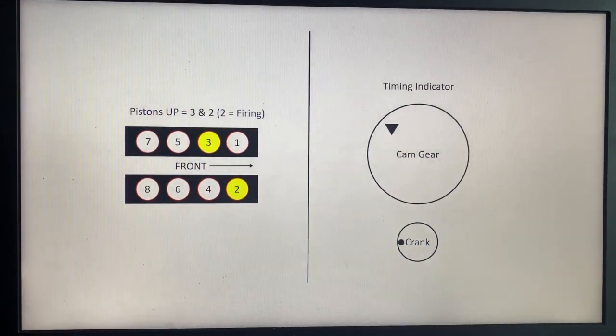Number two will be your firing piston. If you continue around, moving the crank back to twelve o'clock and the cam gear is now at twelve o'clock, number one and six will be up again, and number six will be your firing piston.